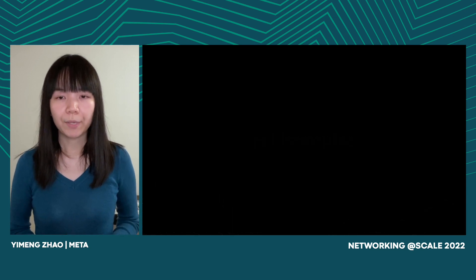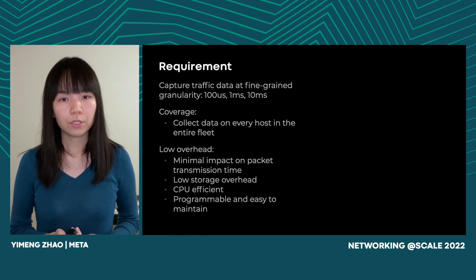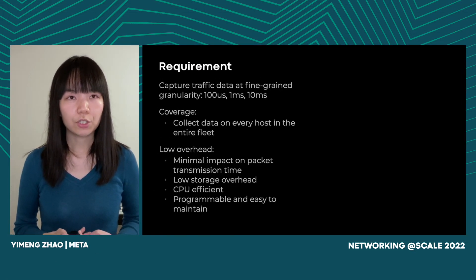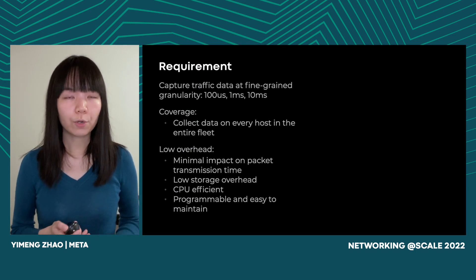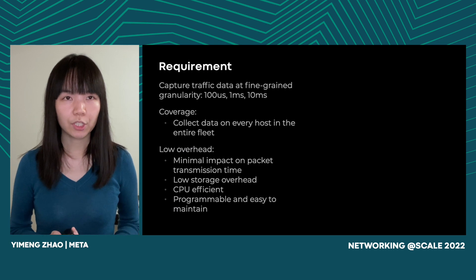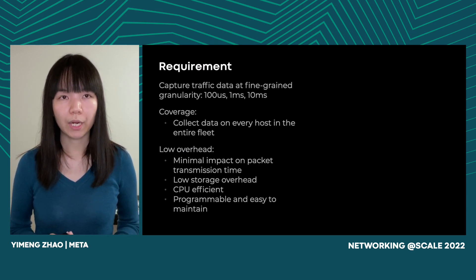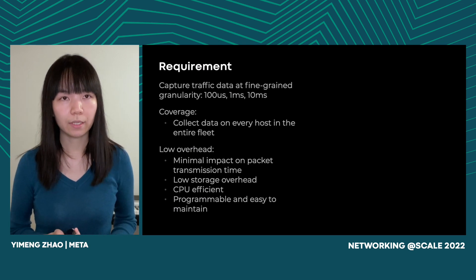For MiniSampler, the basic requirement is that it should be able to capture traffic data at fine granularity — meaning it collects data points at 100 microseconds, 1 millisecond, and 10 millisecond levels. Ideally we want to collect data from every server in the entire fleet in our data center network. The tool needs to have low overhead, meaning minimal impact on packet transmission time even at line rate. Storage overhead needs to be low because we need to store data for every server across the entire fleet. It needs to be CPU-efficient so it doesn't interfere with other services running on our production network. And it needs to be programmable so it can be easily deployed and maintained on every server in our fleet.